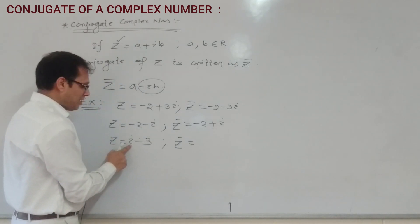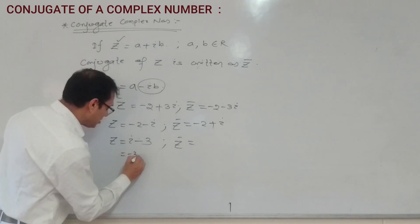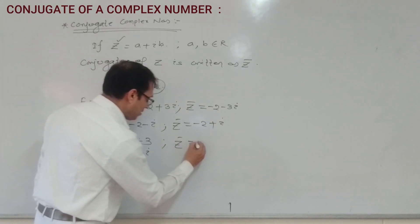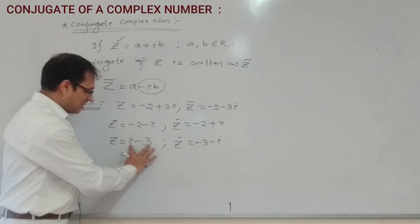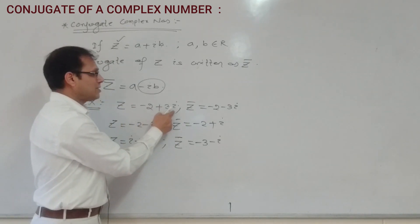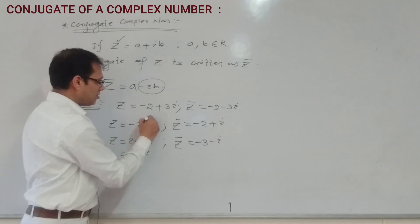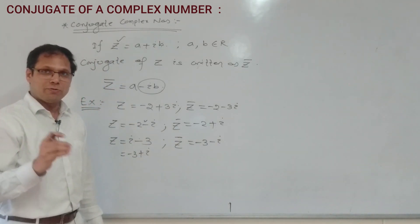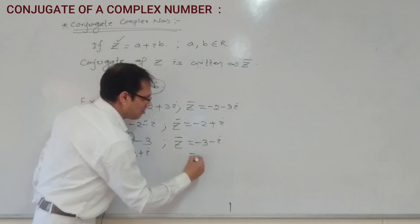The imaginary part changes sign. So if Z equals minus 2 plus 3i, the real part is minus 2 and imaginary part is plus 3, so Z bar equals minus 2 minus 3i. The minus sign is only multiplied to the imaginary part. That gives us 3 minus i, confirming Z bar is minus 2 minus 3i.